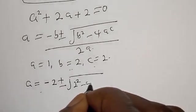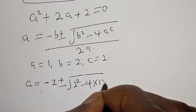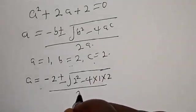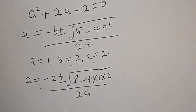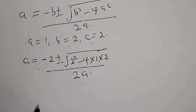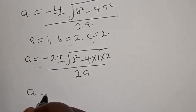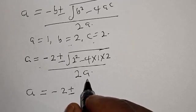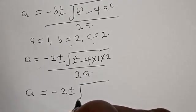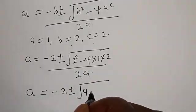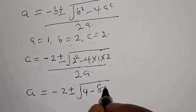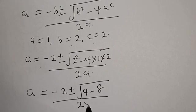Here a equals 1, b equals 2, and c equals 2. We substitute: a is equal to minus 2 plus or minus square root of 2 squared minus 4 multiplied by 1 multiplied by 2, over 2 multiplied by 1. That gives minus 2 plus or minus square root of 4 minus 8, over 2.